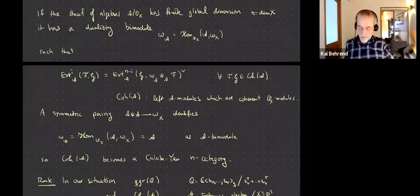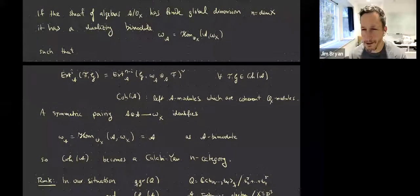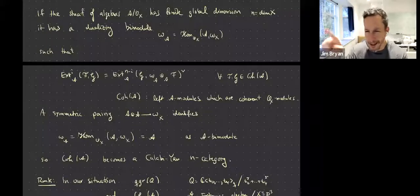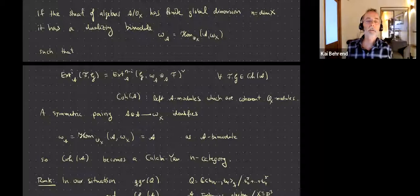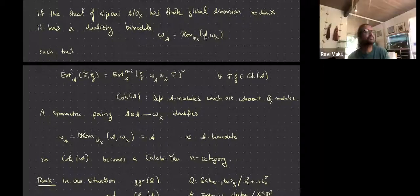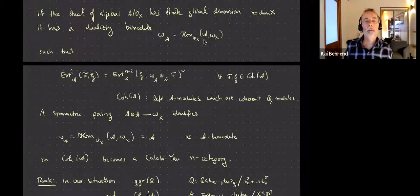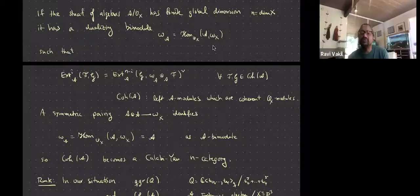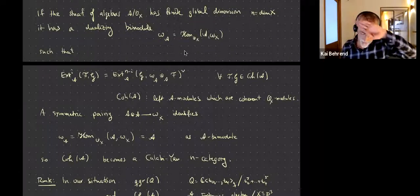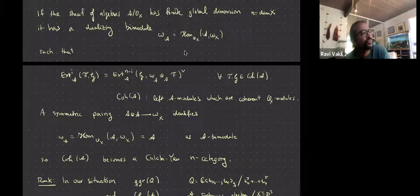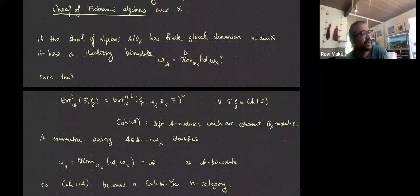The upper-shriek construction — where A is the sheaf of algebras giving the finite cover of X — uses this formula. There's a question about whether the ramification divisor appears here, but I always just use this formula. The point is you can formally write down this dualizing thing, and it does the dualizing in the sense that Ext^i_A(F, G) = Ext^{n-i}_A(G, F)^∨ — it follows from Serre duality on the base.